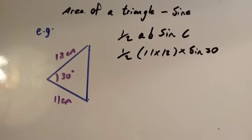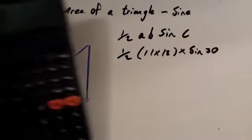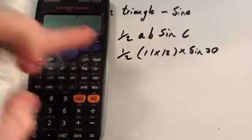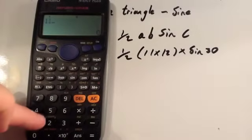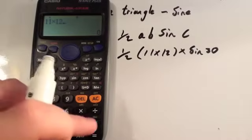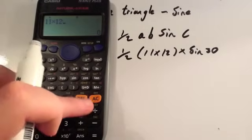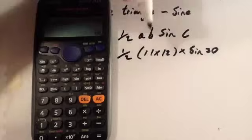Get your scientific calculator, work out a half of 11 times 12, so 11 times 12 times by 0.5, or equals divided by 2, equals 66.